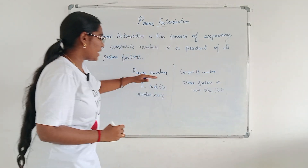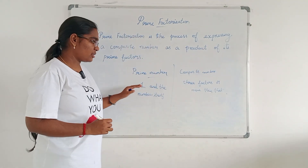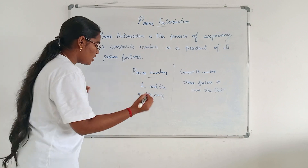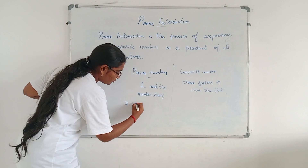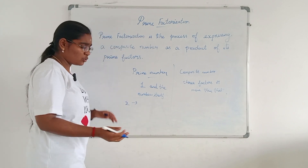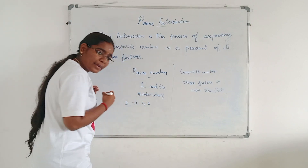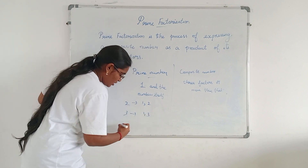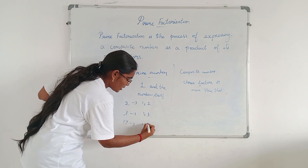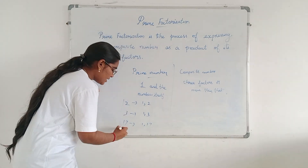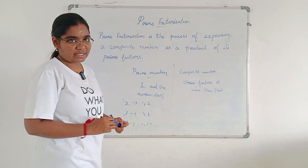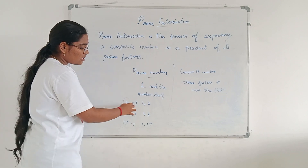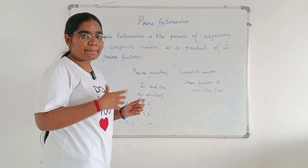A prime number has factors of one and the number itself. For example, take two — its two factors are one and two. For three: one and three. For seventeen: one and seventeen. So these numbers are known as prime numbers, because the factors of prime numbers are one and the number itself.